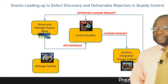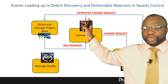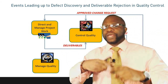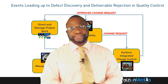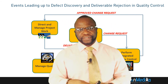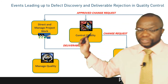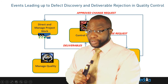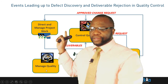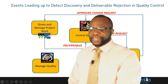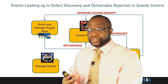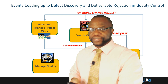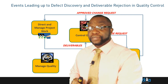Hopefully we're going to get something else. The arrow shows that the approved change request goes into Control Quality and also into Direct and Manage Project Work as we rework this. In the next video, we're going to take a look at exactly what happens when the lady on the conveyor belt approves the deliverable — in other words, when she sees the deliverable has been fit for use, conforming to requirements, and will most likely satisfy the customer. Thanks for joining me; I'll see you in the next video.